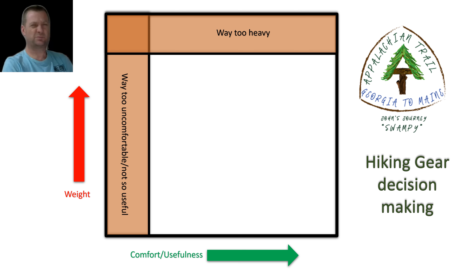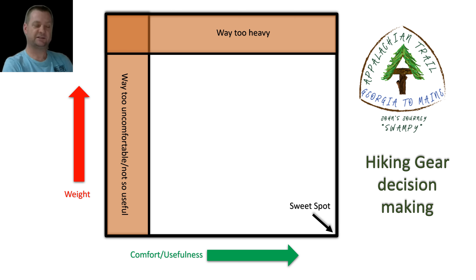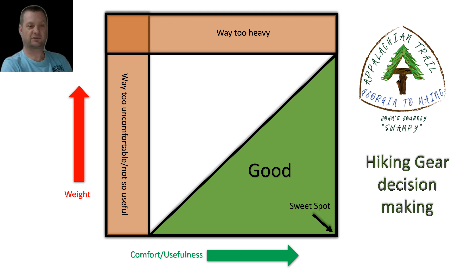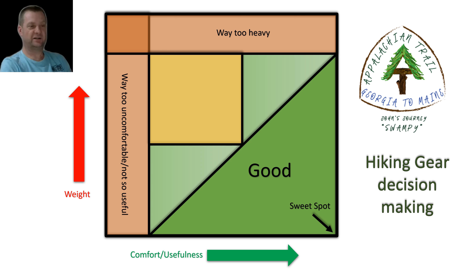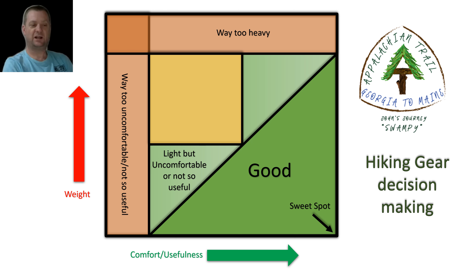And then stuff up in the top area here is just way too heavy, so we avoid that as well. What we're really aiming for is gear that's comfortable or as useful as possible, and preferably dual-use, whilst also being ultra light. That gear would sit right here in the sweet spot in this corner of the graph. There's always a trade-off with weight and comfort or usefulness, and we can accept anything in this corner as a good choice. However, some gear falls outside of this area — we might choose gear that's light but uncomfortable or not so useful, or gear that's comfortable and useful but a little bit heavy.